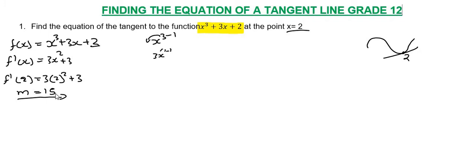Gradient is 15. So we have y, the function at x equals 2, or f(2). Not the derivative, the original function. f(2) equals 2 cubed plus 3 times 2 plus 2. 2 cubed is 8, 3 times 2 is 6, plus 2 equals 16. The point is (2, 16).